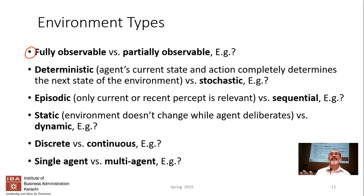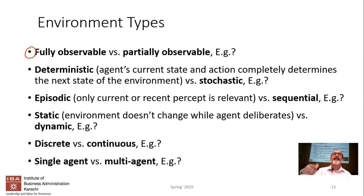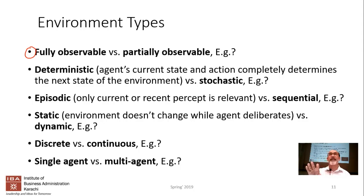Online grading is a good example of a fully observable environment — the student script is there and everything is visible. If I as a teacher were grading you with only partial information, you'd have a serious problem. Chess is also fully observable because the entire chessboard is visible to both players.